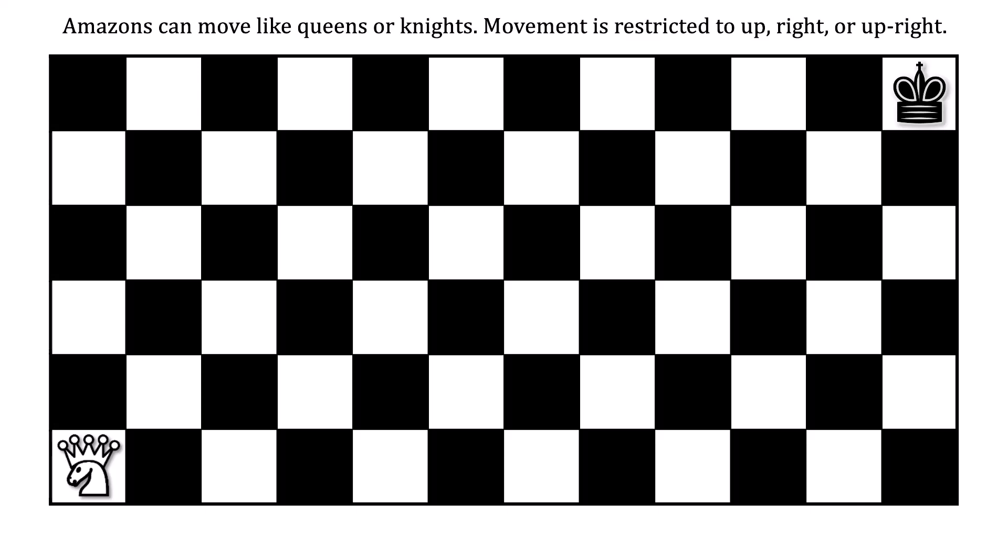Here is the puzzle. You're going first. After that, we alternate who moves the Amazon. On each turn we are obligated to move, we cannot keep the Amazon in its current space.